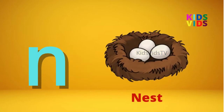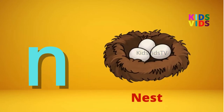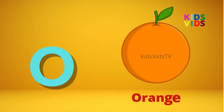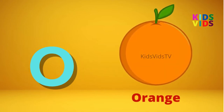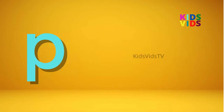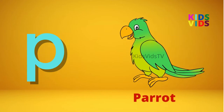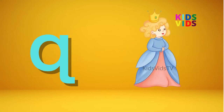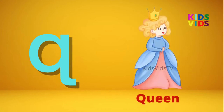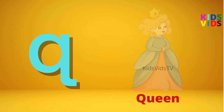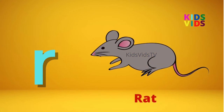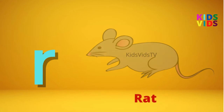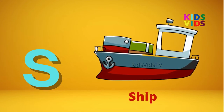N for Nest. O for Orange. V for Parrot. Q for Queen. R for Rat. S for Shape.